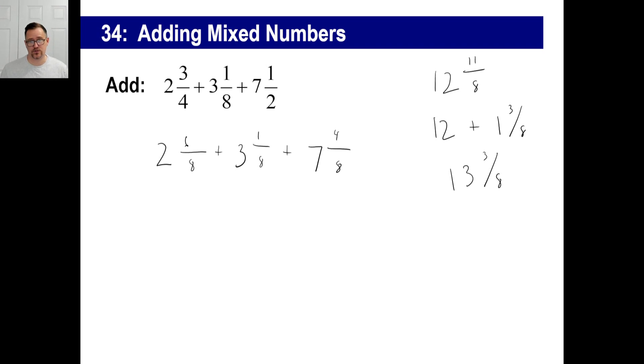Now another way to do this if you want to, you can take this and make it into an improper fraction, each one of these if you'd like to. So we have 4 times 2 is 8 plus 3 is 11/4 plus, that's going to be 25/8 plus 7 and 1/2 will be 14 plus 1, 15/2.